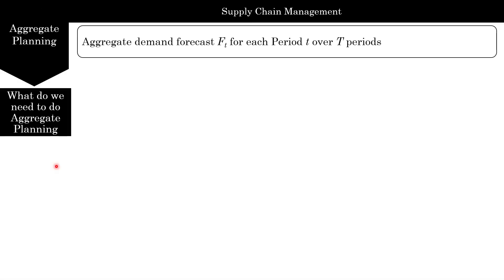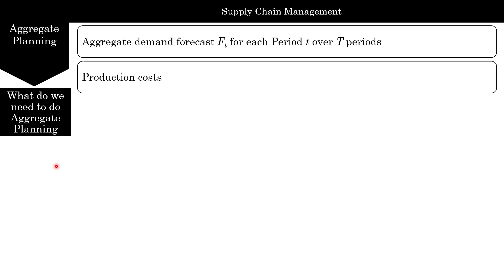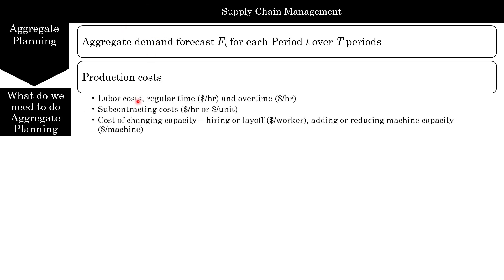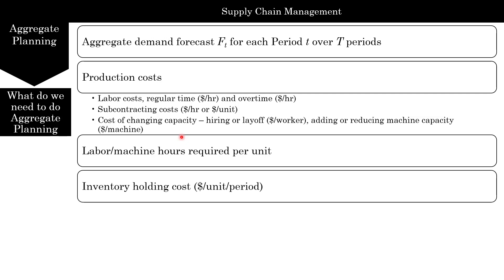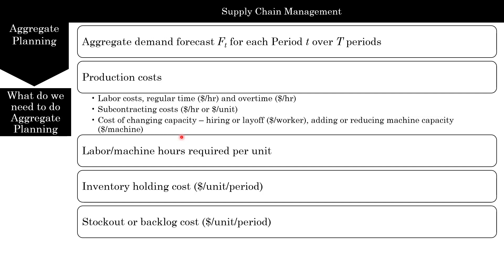For aggregate planning, you need the forecasts, production costs, and labor costs — what are your regular time costs and overtime costs in dollars per hour. You also need subcontracting costs in dollars per hour or dollars per unit, and the cost of changing capacity such as hiring and firing workers. You can change capacity by increasing machinery, but that's difficult. It's easier to add and lay off workers in a short-term planning horizon. Fixed costs like capital investment in machinery can be very expensive. You also need labor or machine hours required per unit, and inventory holding costs in dollars per unit per period, as well as stockout or backlog costs.